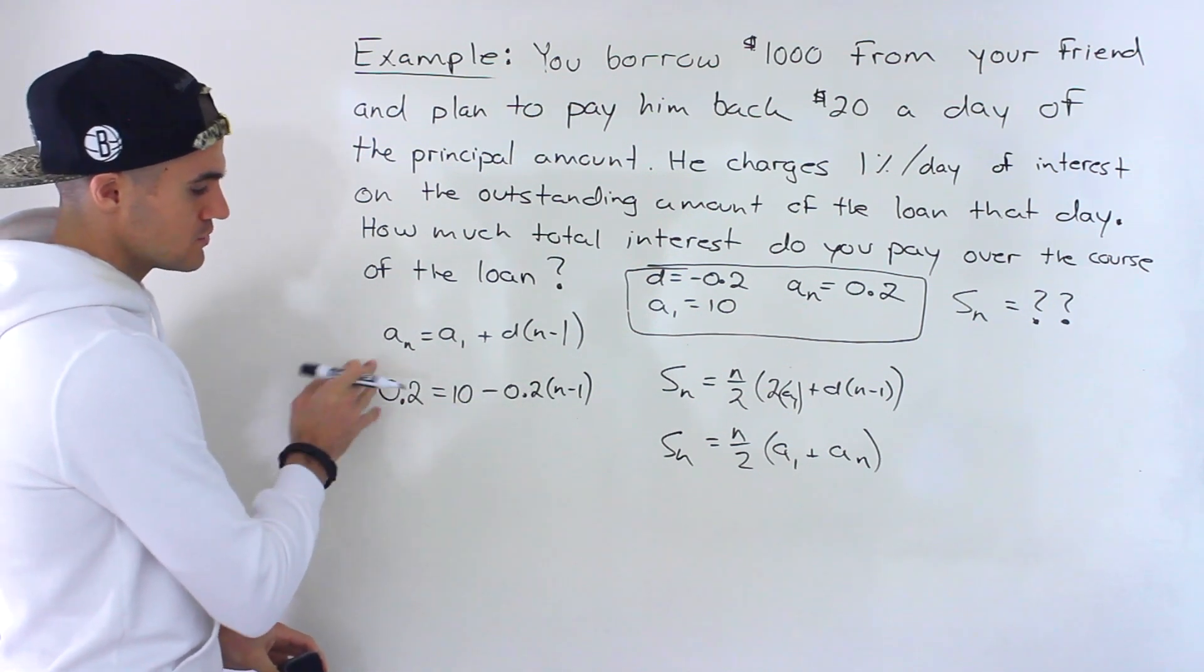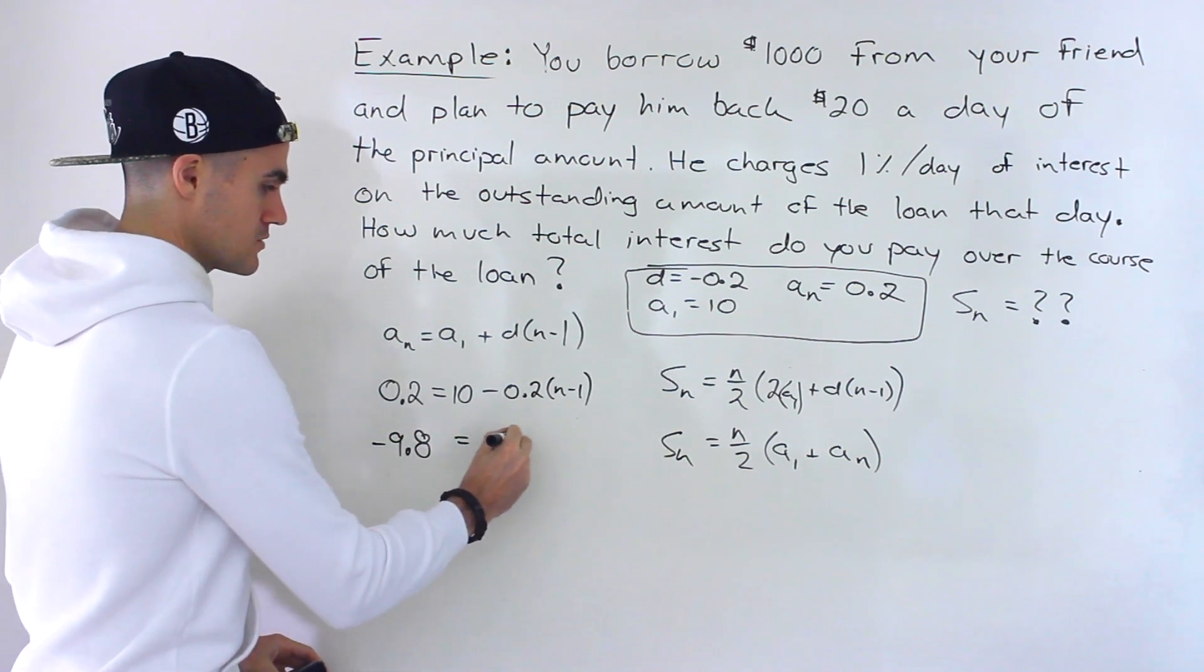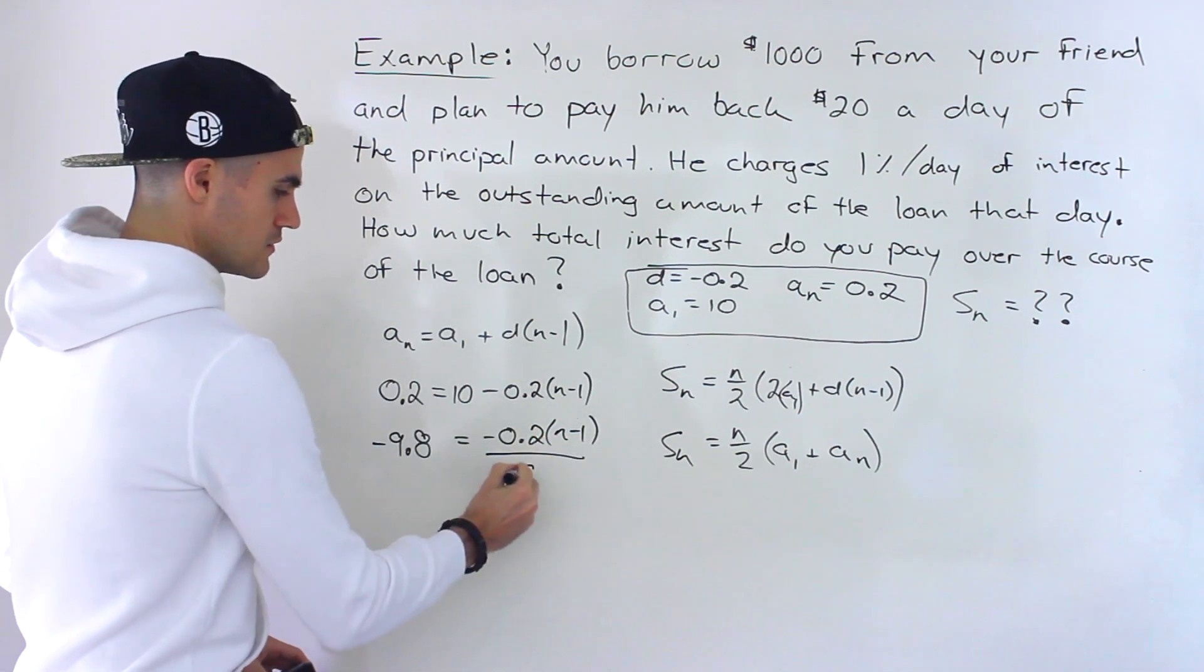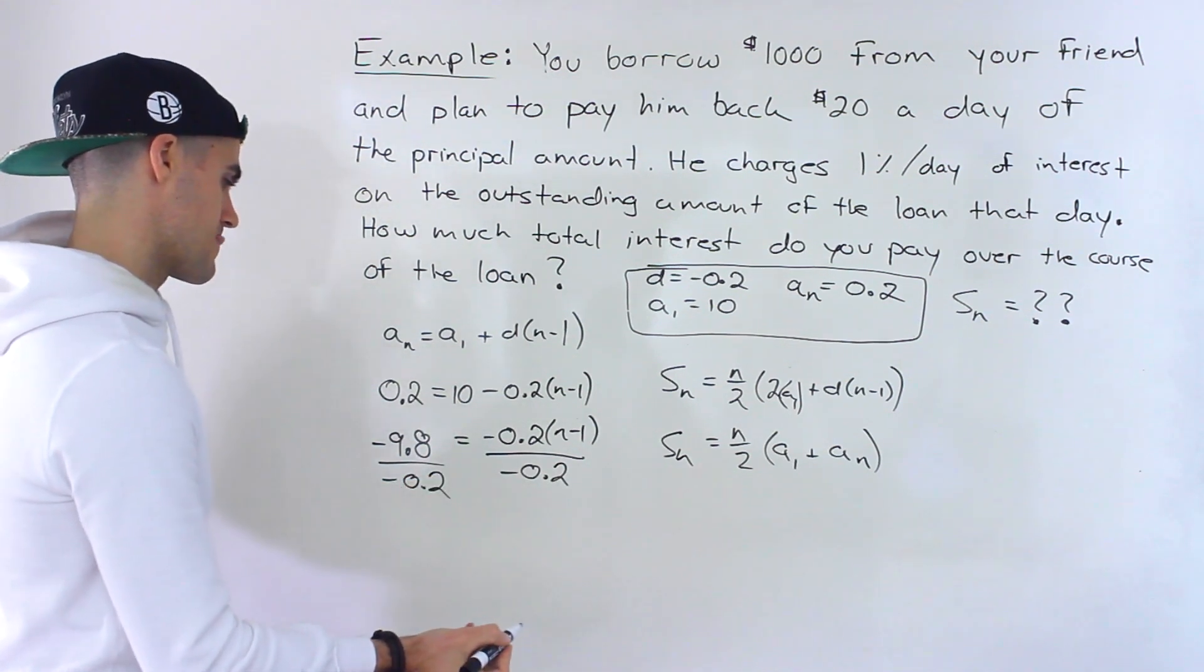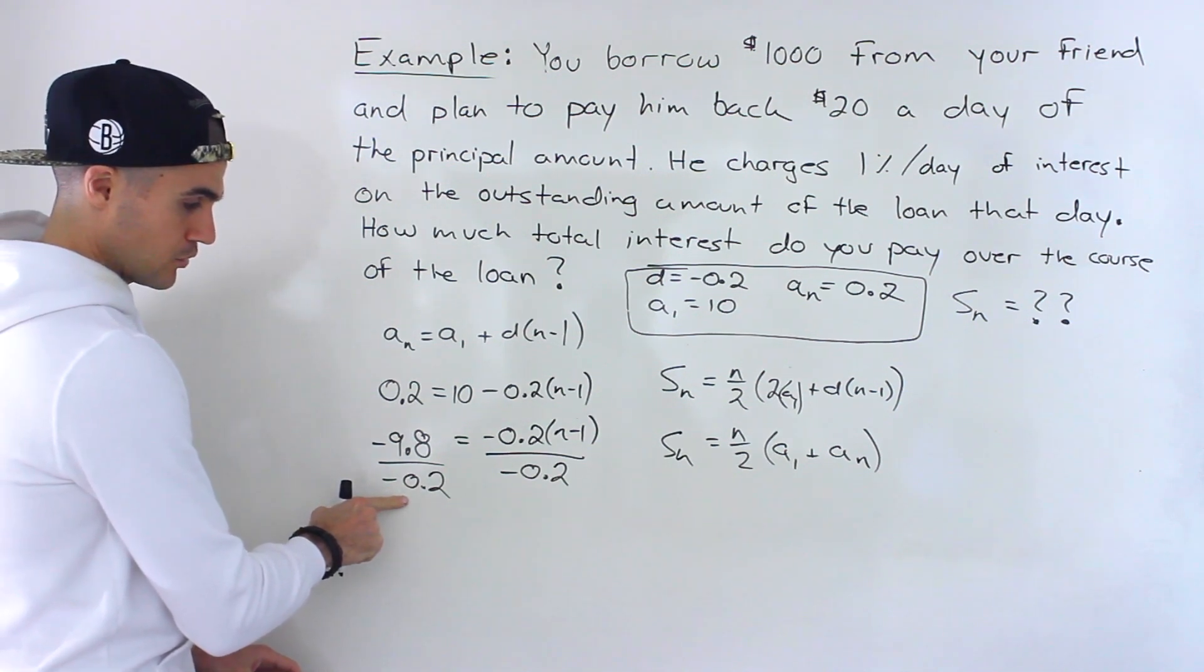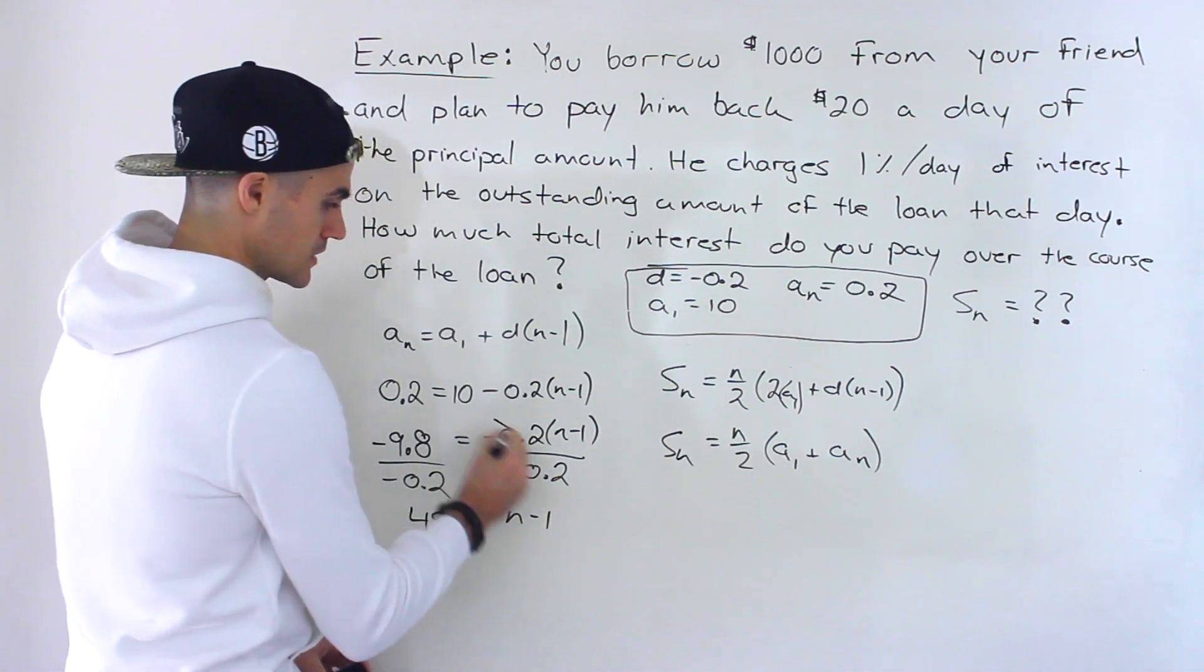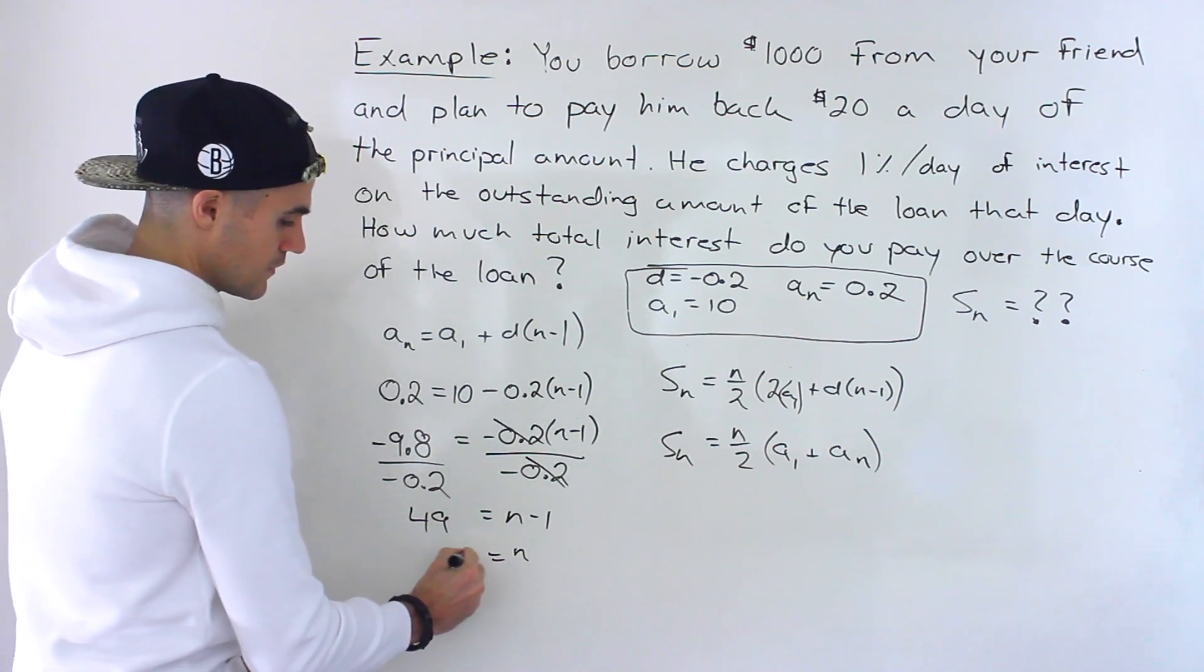So 0.2 minus 10 would give us negative 9.8. And then we'd have negative 0.2 over here. Now, we could distribute this negative 0.2 in this bracket. But because we're multiplying, I'm actually going to divide at this point, like that. Negative 9.8 divided by negative 0.2 would give us positive, let's actually do it here, positive 49, which would give us n minus 1, because these cancel out. So then the n value is 50.